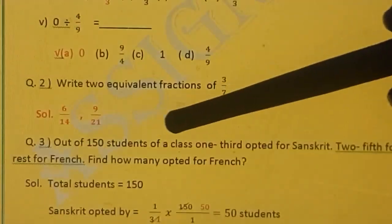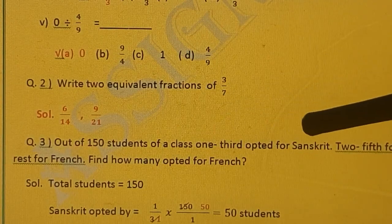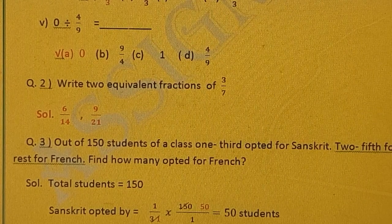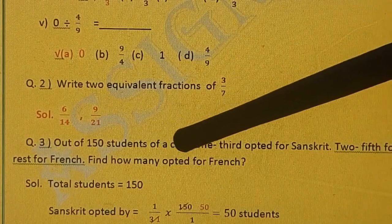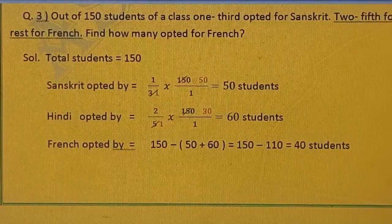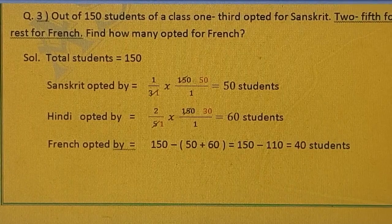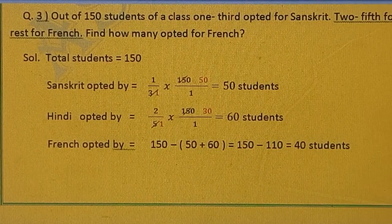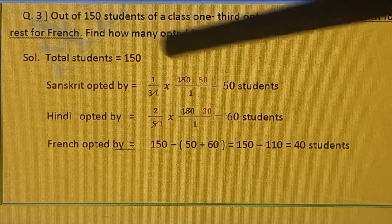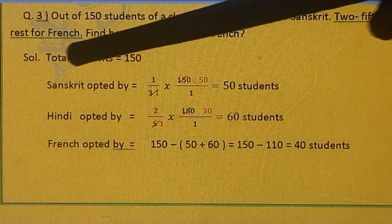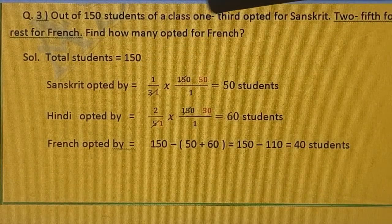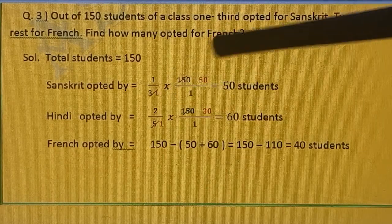Out of 150 students of a class, one third opted for Sanskrit and two fifths for Hindi and rest for French. Find how many opted for French. Opted meaning I told you that is to choose or to select. So total students are 150. Sanskrit opted by 1.